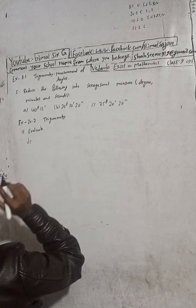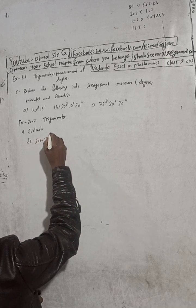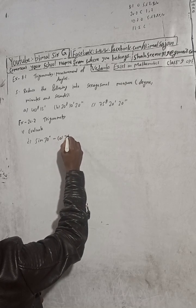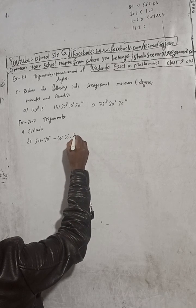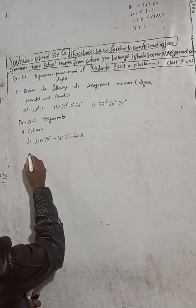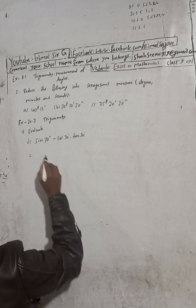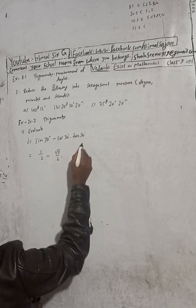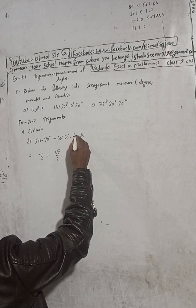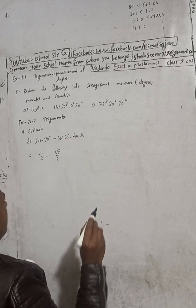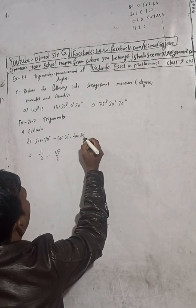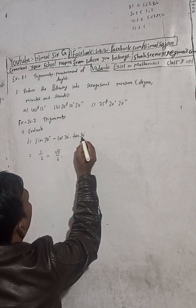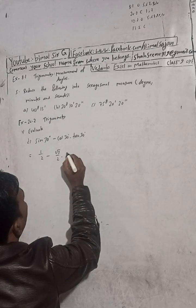sin 30 degree minus cos 30 degree into tan 30 degree — this is the solution. sin 30 is 1 by 2, minus cos 30 is root 3 by 2, into tan 30.